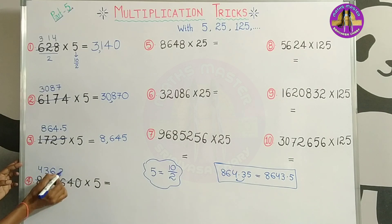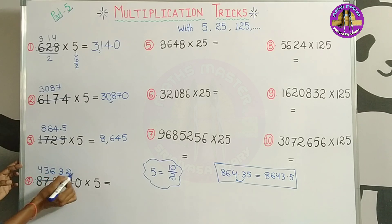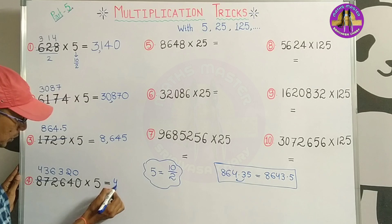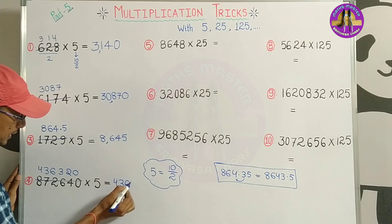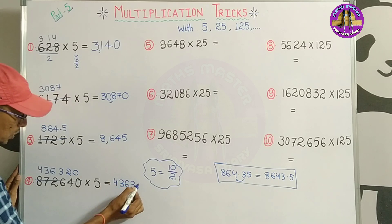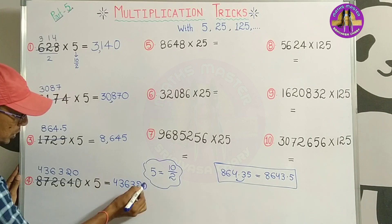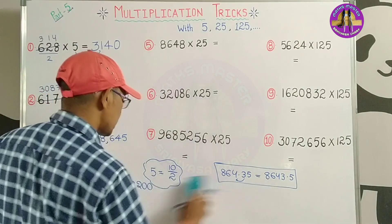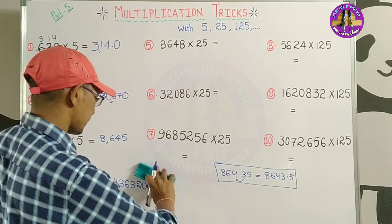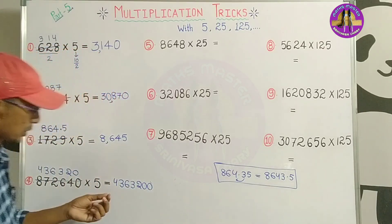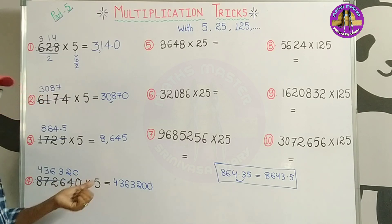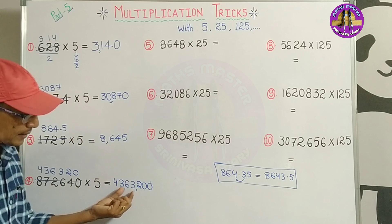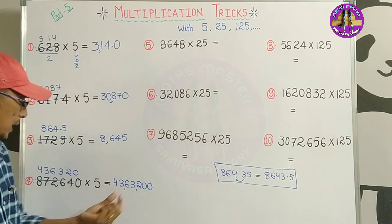So our answer becomes 4, 3, 6, 3, 2, 0, 0. You can write 0. So our answer is 4, 3, 6, 3, 200.